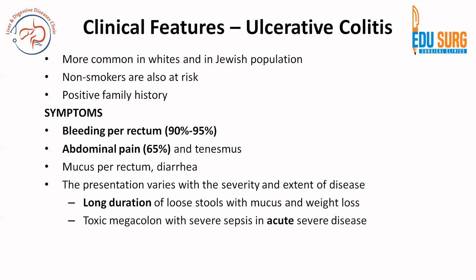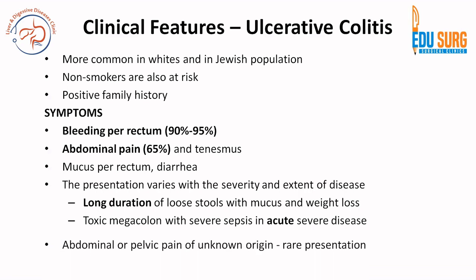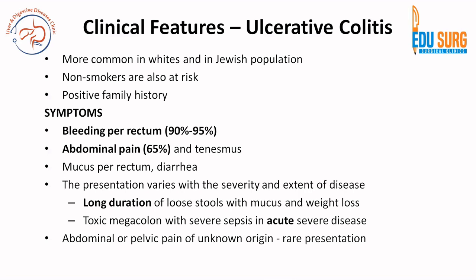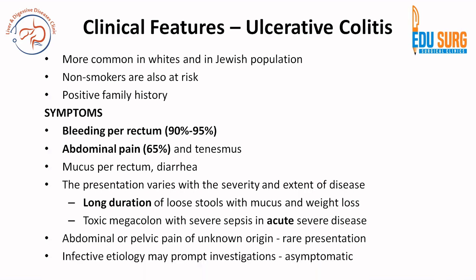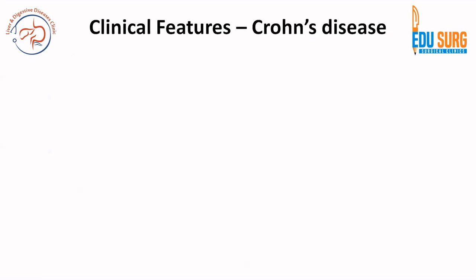The presentation will vary with severity and extent of disease. Phase one can have active colitis or complicated colitis. If the patient presents with toxic megacolon and severe sepsis, that is acute severe disease. Alternatively, the patient can have a long duration of loose stools and mucus with weight loss of unknown origin and abdominal or pelvic pain — again, think of ulcerative colitis as a differential. Sometimes infective colitis prompts investigations that then identify ulcerative colitis.